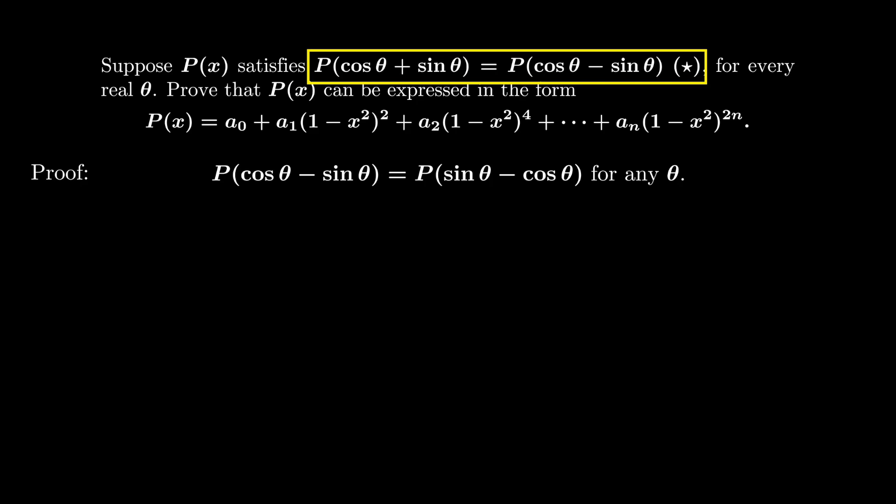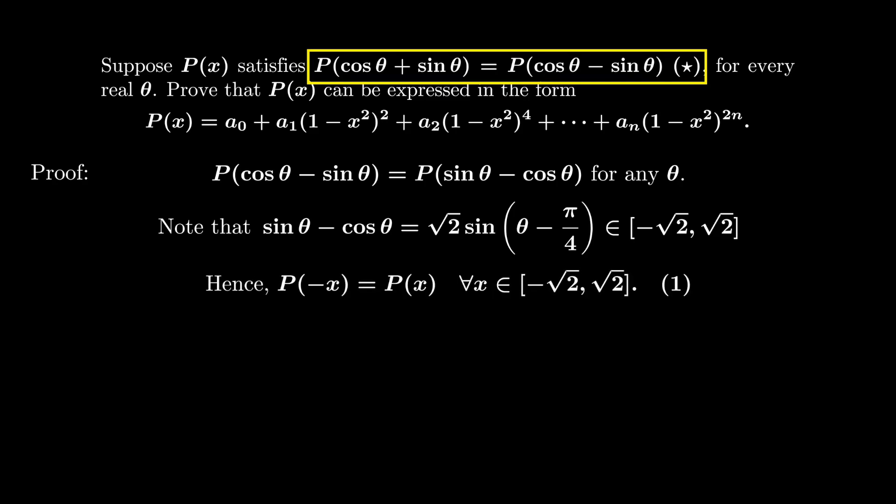Since this is true for any θ, we want to conclude that the polynomial P is even. We need to be a little bit careful here. Even though the variable θ could take any value, the function sin θ - cos θ could not take any arbitrary value. Indeed, sin θ - cos θ = √2 sin(θ - π/4). It is clear that this function only takes values between -√2 and +√2.